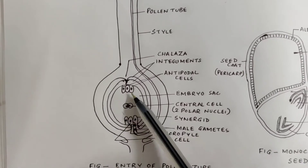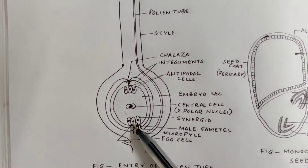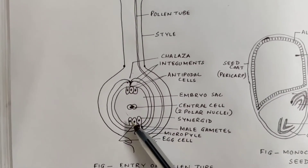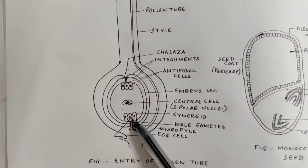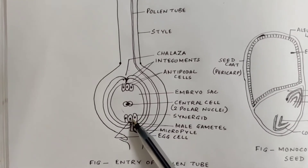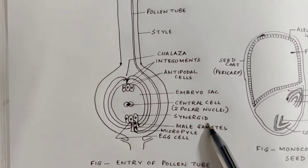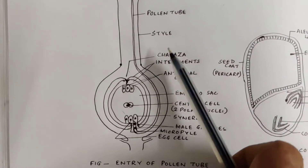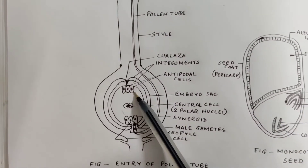This is the chalazal end and this is the micropylar end. The micropylar end has three cells — the middle cell is known as the egg cell and the two cells on either side are known as synergids. On the chalazal end you see three cells.